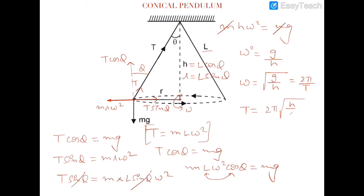Since omega equals 2 pi over T, the time period T equals 2 pi times the square root of h over g. This is the time period of the conical pendulum, where h is the vertical height from the hinge point of the rope on the roof to the center of the horizontal circle.